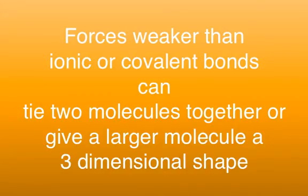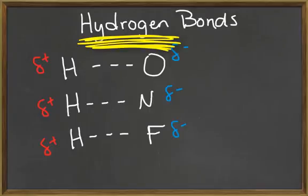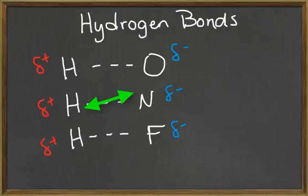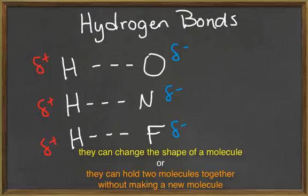The ionic bonds and the covalent bonds that we've already discussed tie atoms together to form molecules or compounds. However, there are other forces — weaker forces — that help tie two molecules together or that help a larger molecule take on a different shape. The most important of these weaker forces is the hydrogen bond. A hydrogen bond is an attraction between the partial positive charge of a hydrogen atom and the partial negative charge on an oxygen, nitrogen, or fluorine atom. The oxygen, nitrogen, or fluorine atom can be on a different molecule or on the same molecule as the hydrogen atom. These hydrogen bonds are too weak to create a new molecule, but they can change the shape of a molecule or they can pull molecules together.